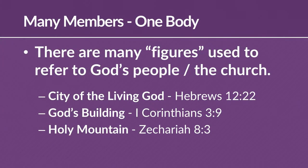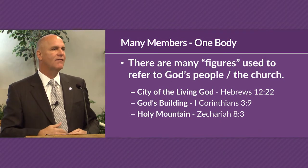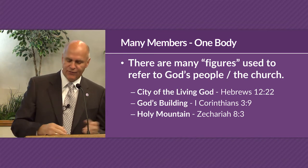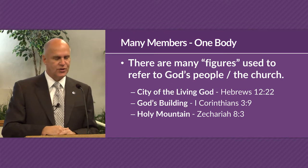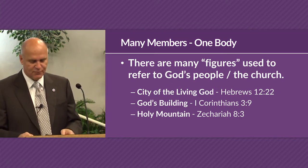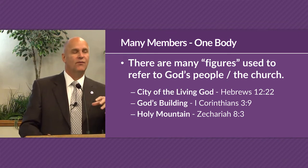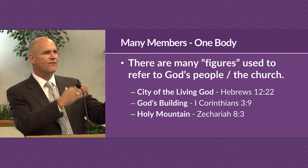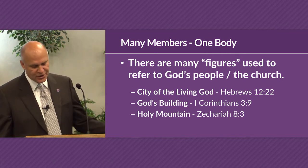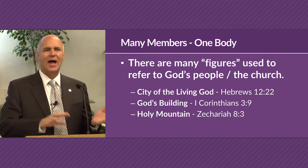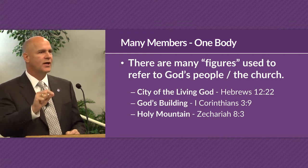In the Bible there are more than 50 different figures used to refer to the church or to God's people. For example, in Hebrews chapter 12, verse 22, the church is referred to as the city of the living God. In 1 Corinthians 3, Paul refers to the church as God's building. And in Zechariah chapter 8, verse 3, the prophet says of the people of God, they're the holy mountain of God. So all these different figures throughout the Bible always describe the same thing — the church or the people of God — and each figure represents some aspect or feature of the church that God was trying to accentuate.